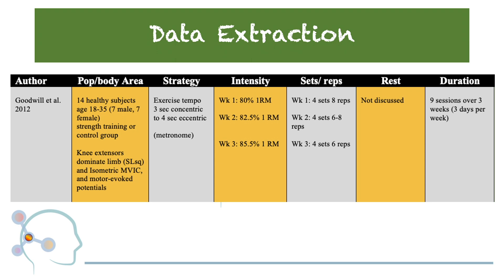Specific programming parameters included 9 sessions over 3 weeks, working out to 3 days per week. During week 1, individuals worked at 80% of a 1-rep max for 4 sets of 8 reps. During week 2, this was increased by 2.5%, working 4 sets of 6 to 8 reps. During week 3, this was 85.5% of a 1-rep max for 4 sets of 6 reps. The exercise tempo used was a 3-second concentric to 4-second eccentric contraction during the single leg squat, with the use of an auditory metronome.